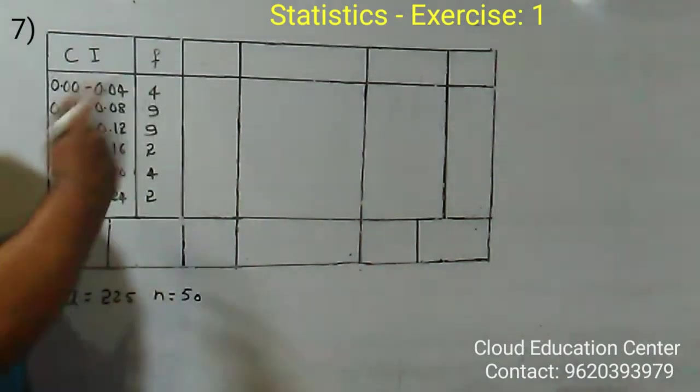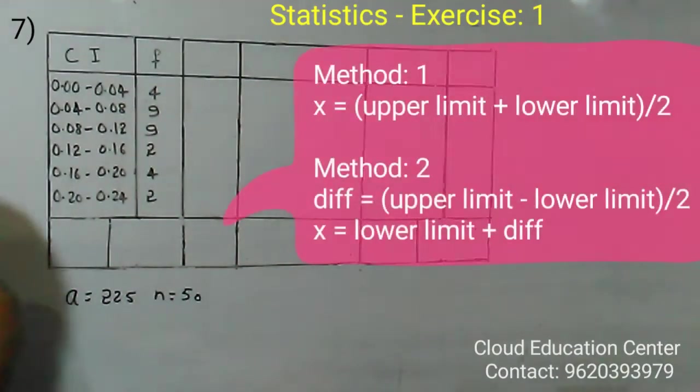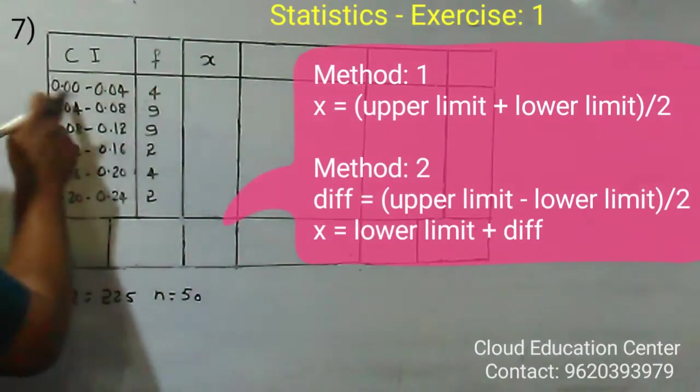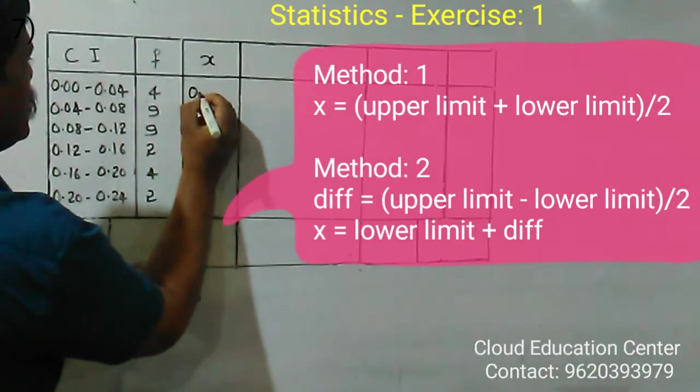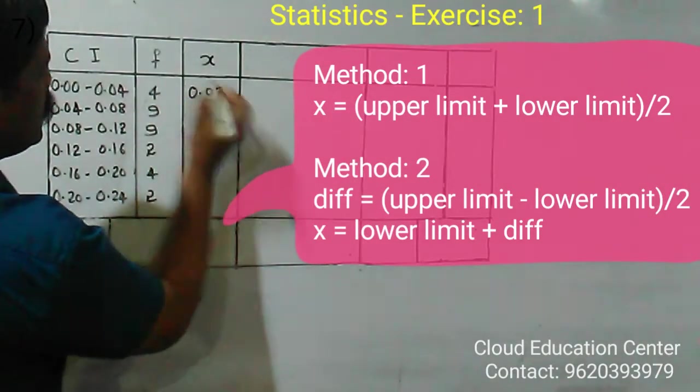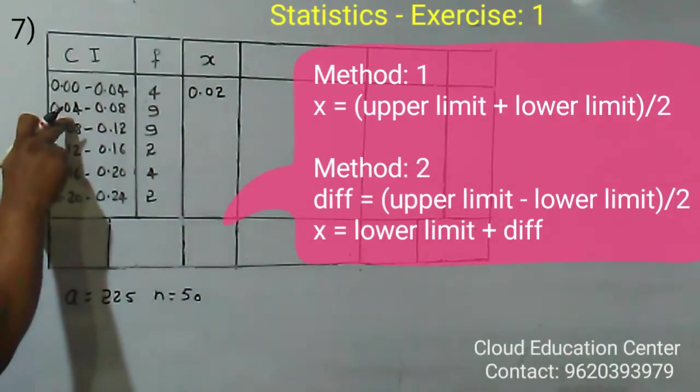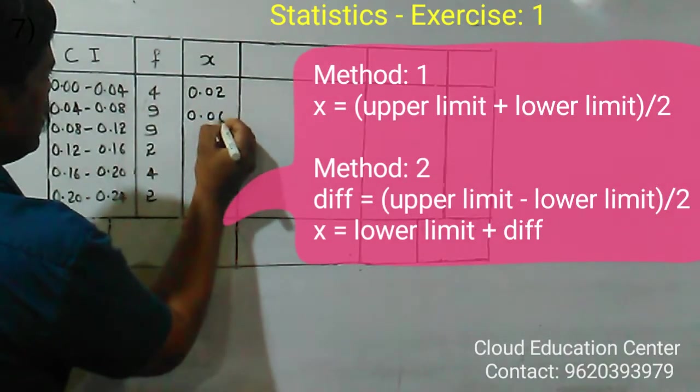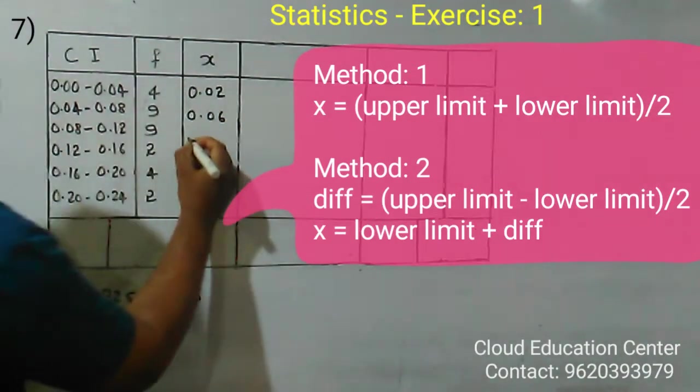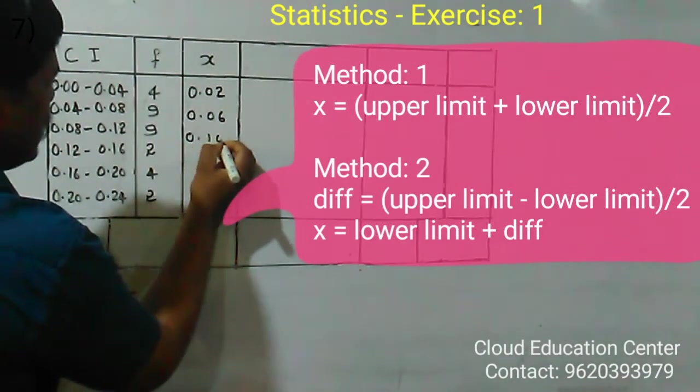Add it to the lower limit to get X, the class mark. Adding 0.02 to 0.00 gives 0.02. Similarly, add 0.02 for the next interval to get 0.06. Add 0.02 to get 0.10.